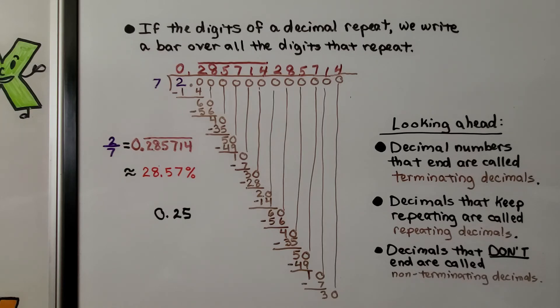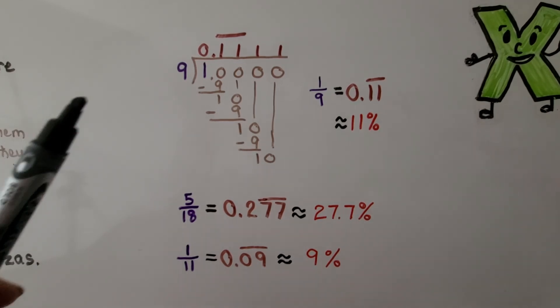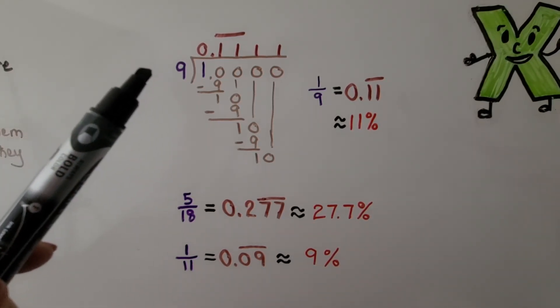That would be like pi, 3.14. But it keeps going on and on with many digits. So we just say 3.14 to work with it and we use an approximation symbol. We'll learn about pi in seventh grade.